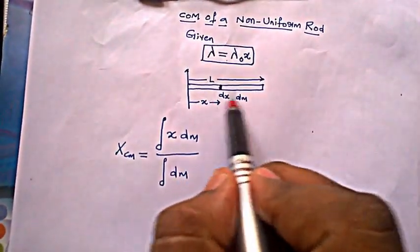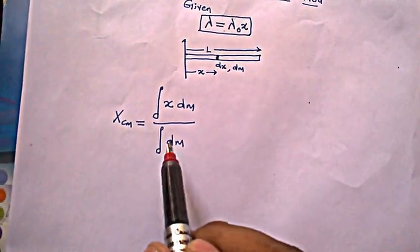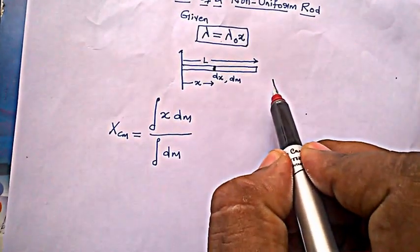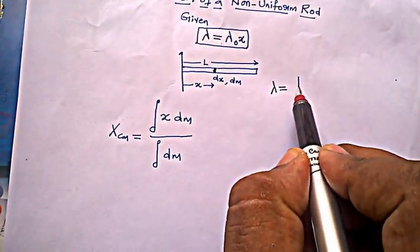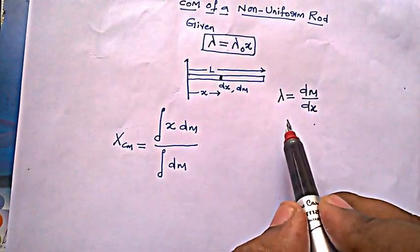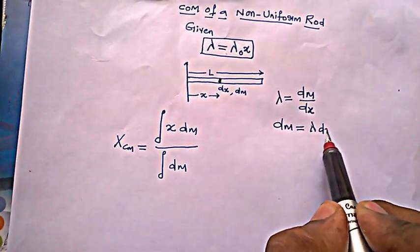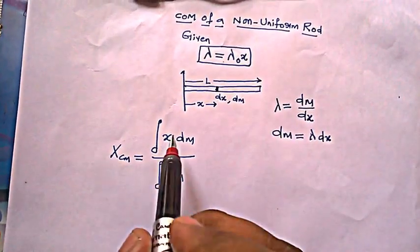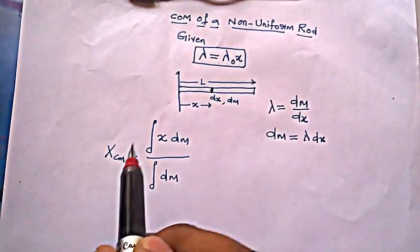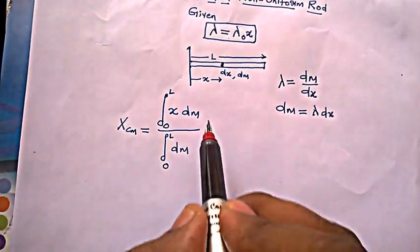Since this is a non-uniform rod, we need to integrate both the numerator and the denominator. We know that lambda is dm by dx, so dm can be written as lambda into dx. The limits are from 0 to L for the entire length, both in the numerator and denominator.